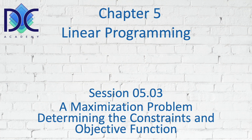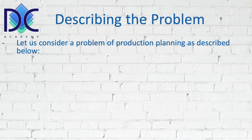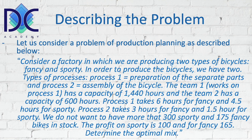The description of the problem typically looks like this: consider a factory in which we are producing two types of bicycles — fancy and sporty. In order to produce the bicycles we have two types of processes. Process one is the preparation of the separate parts and process two is the assembly of the bicycle.